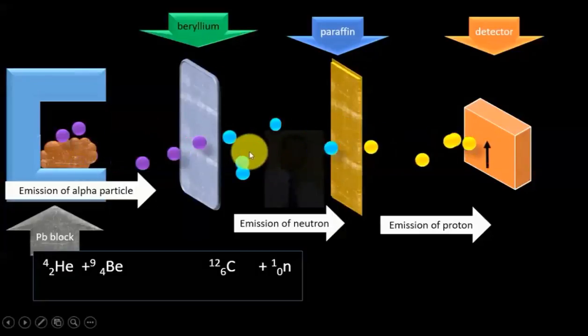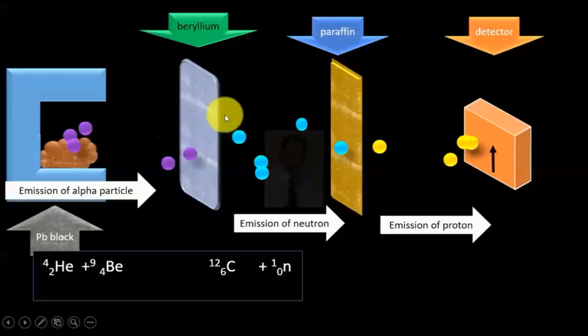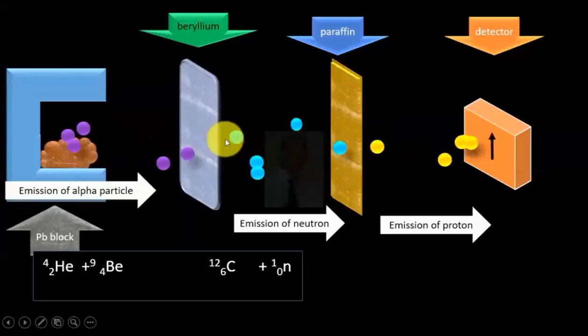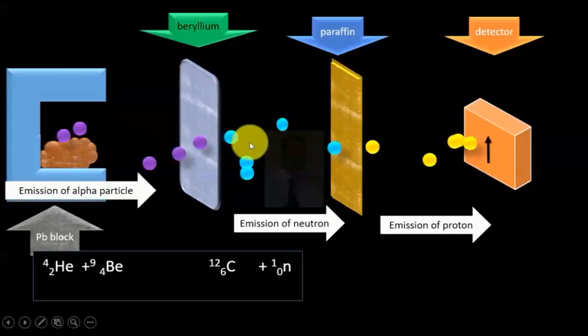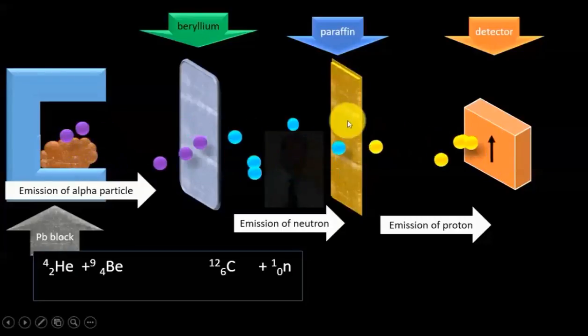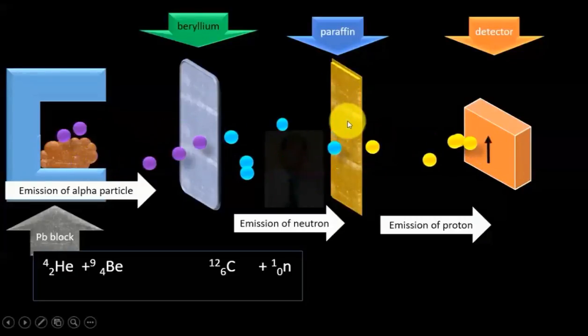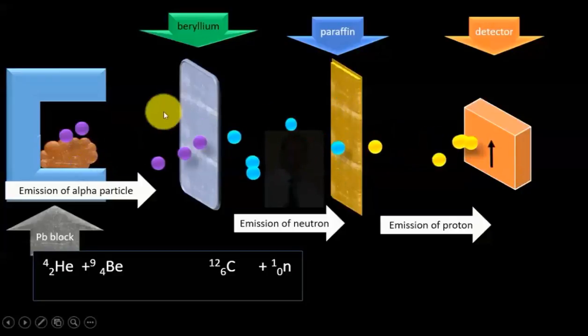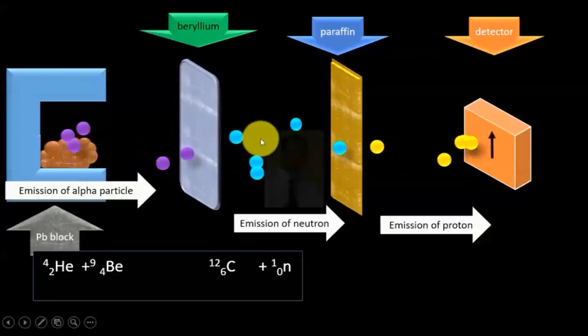We already know that if these radiations which were coming from beryllium were gamma rays, they would not be able to eject protons from paraffin material. So it was established that radiations coming from beryllium were neutrons and not gamma rays.